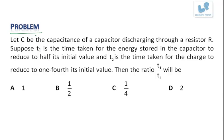Now let us look at the next problem. Let C be the capacitance of a capacitor discharging through a resistor R. So C is the capacitance, R is the resistor and it is getting discharged.